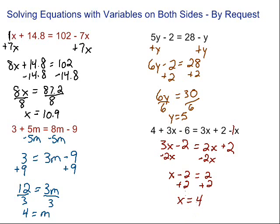Remember, when solving equations with variables on both sides: first, make sure you've combined any like terms on each side of the equation — are there any terms with the same variable, or any constant terms you can combine? After that, get all the variables on one side or the other. It doesn't matter which side, just get them together. Then it just becomes regular equation solving — get that variable all by itself by doing the opposite of whatever's there to get rid of it.